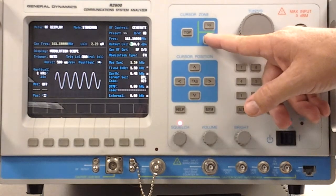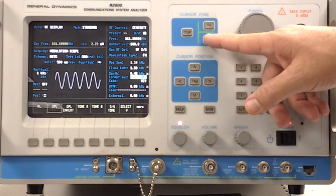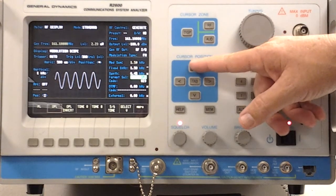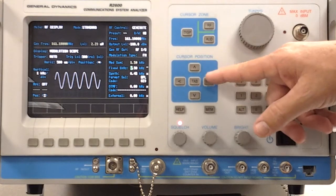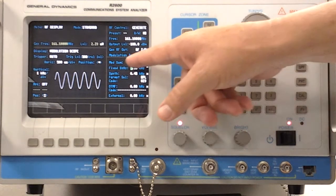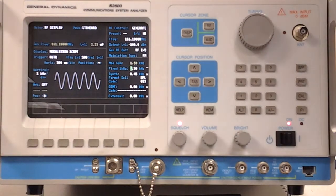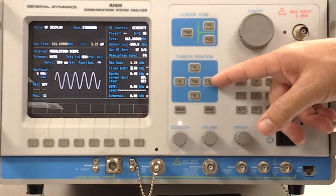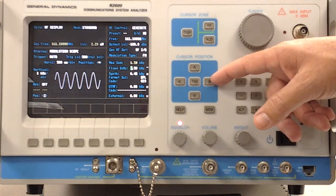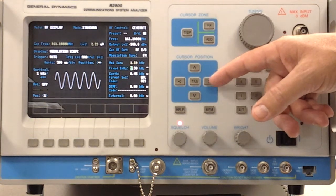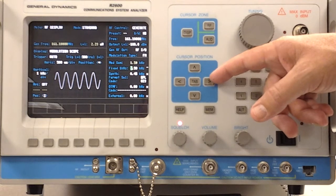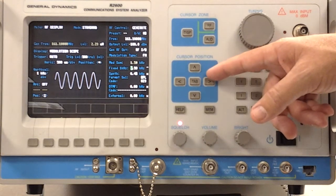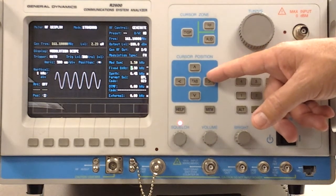We would move to the audio zone, and within the audio zone, we can set our fixed thousand cycle deviation of the signal. This sets the level of deviation. Typically, for a 2.5 maximum deviation narrow band channel, we would set 60%, and 60% would be the 1.5 kilohertz.